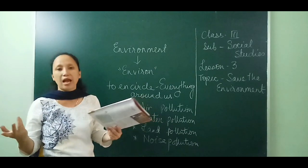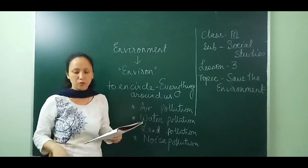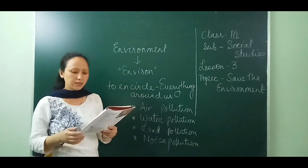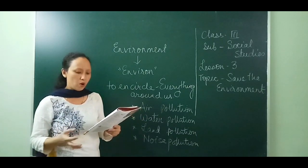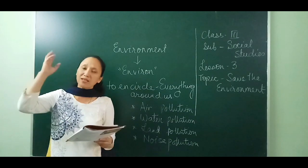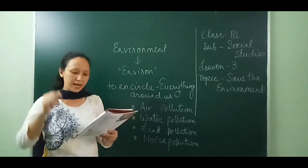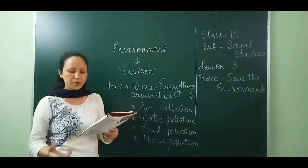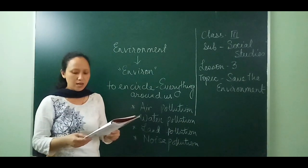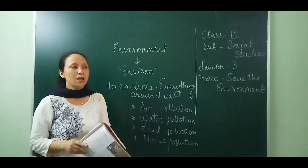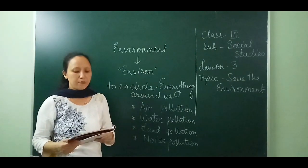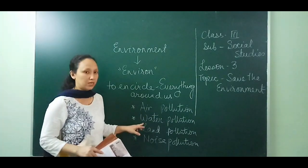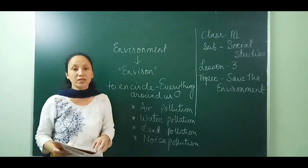We cannot imagine life without water. Our bodies are also composed maximally of water. The main source of water is rain — some of this water goes underground and we bring it up for different activities. Unfortunately, water bodies are being polluted. How do water bodies get polluted? Let us see the points.